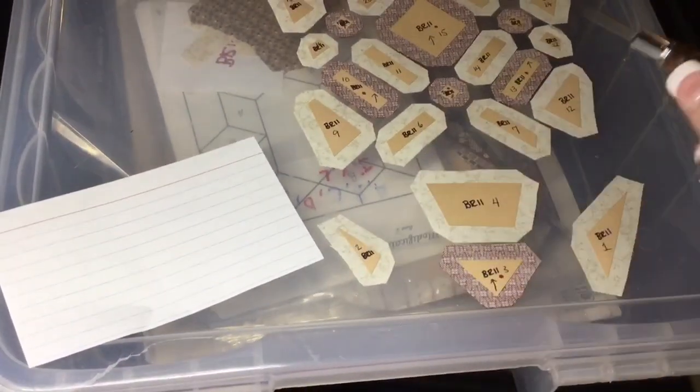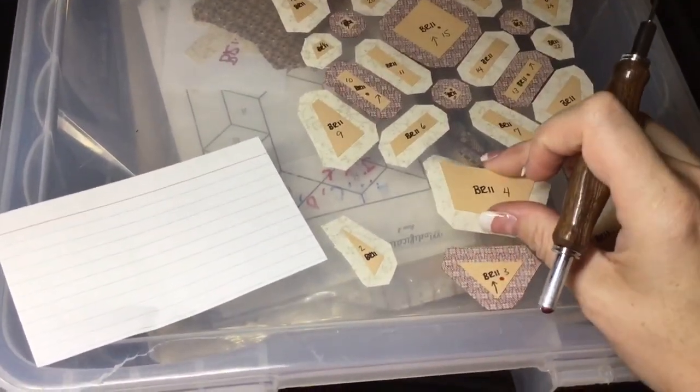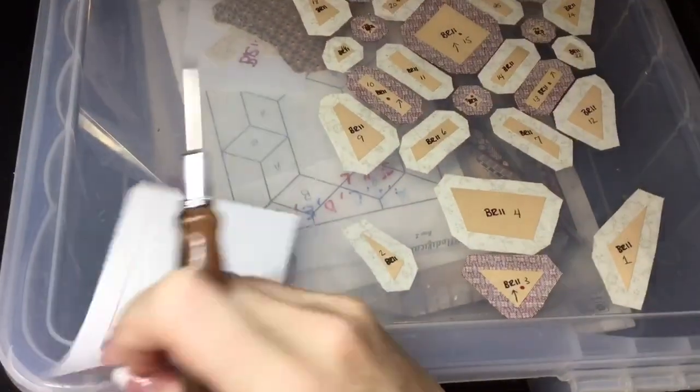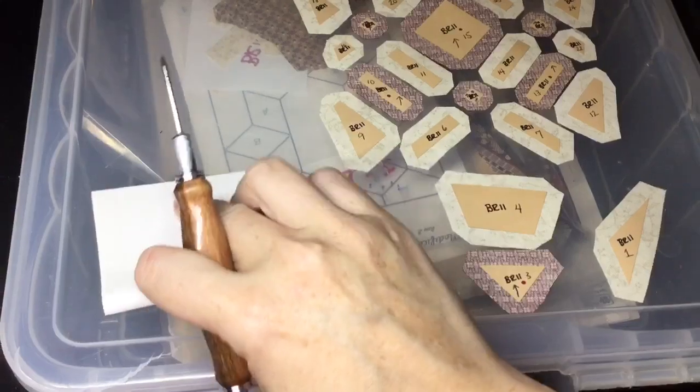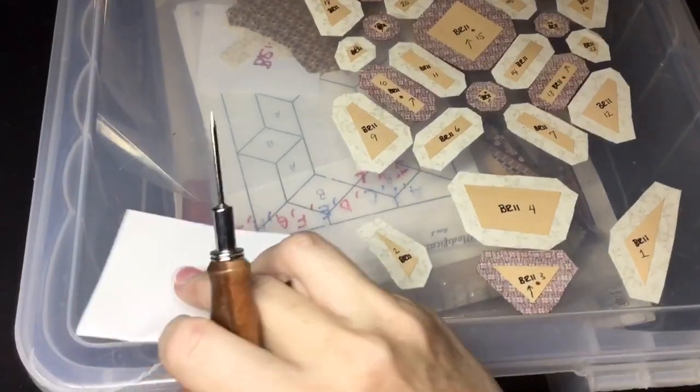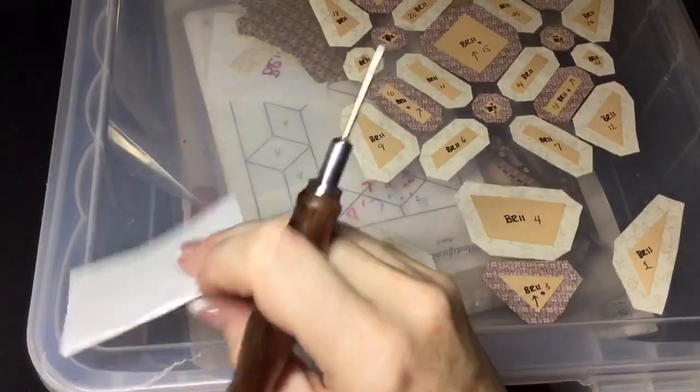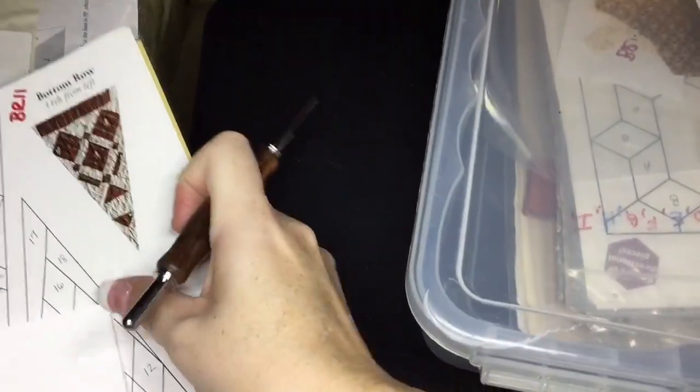So what I'm going to do is I have note cards, these school note cards. This one's actually kind of crappy and they're not as thick as this paper, but I'm going to take this and fold it in half to get a double thickness, and then I'm going to trace this piece.